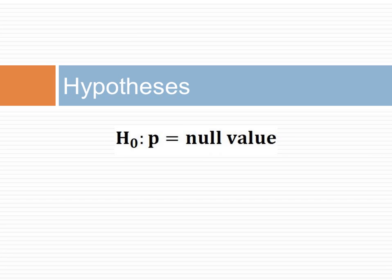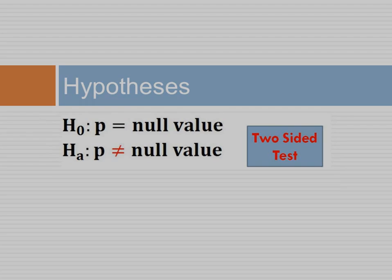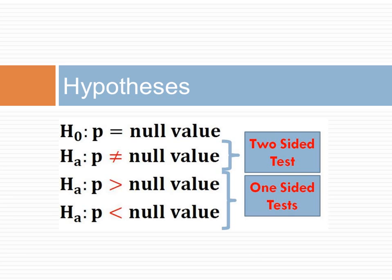In our framework for hypothesis testing, the next step is to state the hypothesis. The null hypothesis is that the probability of success, or the rate of observing the event, is a specific value. The alternative hypothesis, if you're doing a two-sided test, is that the rate is not the hypothesized null value. The alternative hypothesis, if you're doing a one-sided test, is that the rate is either more or less than the null value.